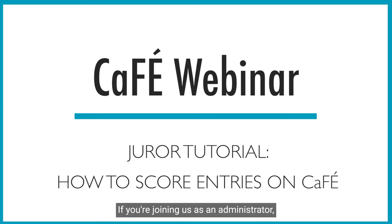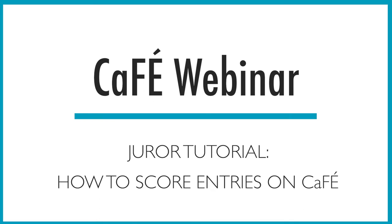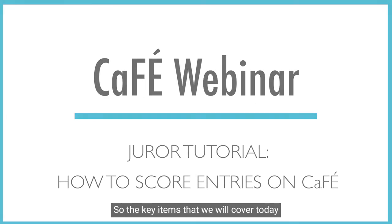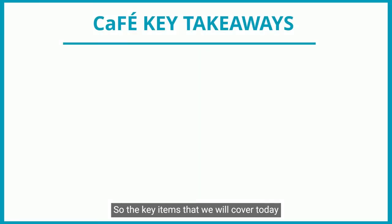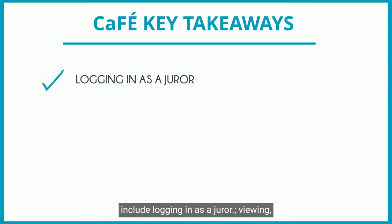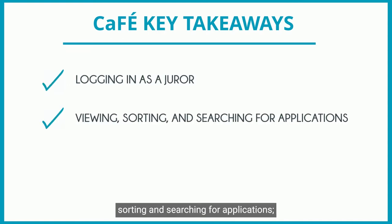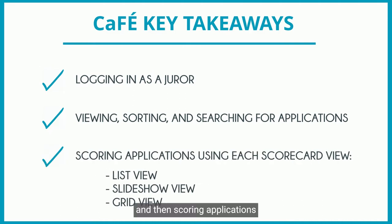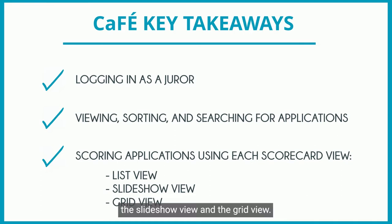If you're joining us as an administrator, this will give you an inside look at the jury process and what your jurors will expect. The key items we will cover today include logging in as a juror, viewing, sorting, and searching for applications, and then scoring applications using each scorecard view: the list view, the slideshow view, and the grid view.